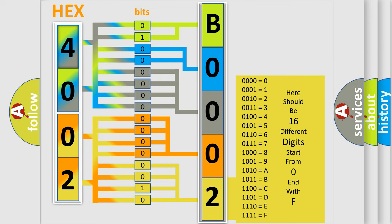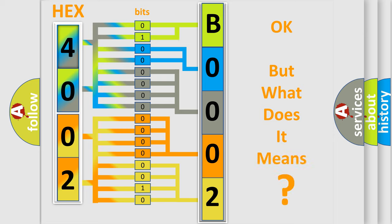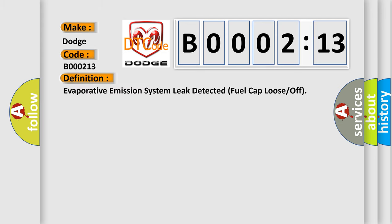We now know in what way the diagnostic tool translates the received information into a more comprehensible format. The number itself does not make sense to us if we cannot assign meaning to what it actually expresses. So, what does the diagnostic trouble code B000213 interpret specifically for Dodge car manufacturers? The basic definition is: Evaporative emission system leak detected — fuel cap loose or off.